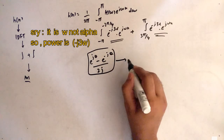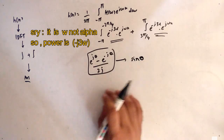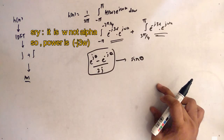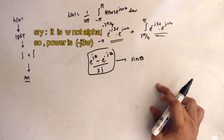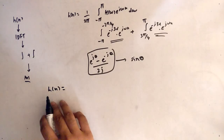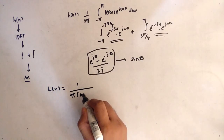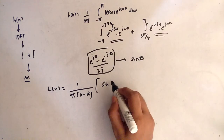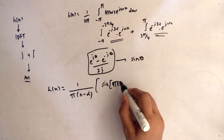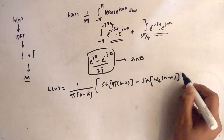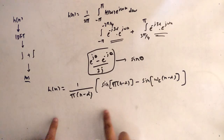This form converts to sine of θ. After solving, we get the standardized formula: h(n) = 1/(π(n−α)) × [sin(πn − πα) − sin(ωc(n−α))]. This is the standardized formula — trick one — which lets us write the answer directly and then verify backward.